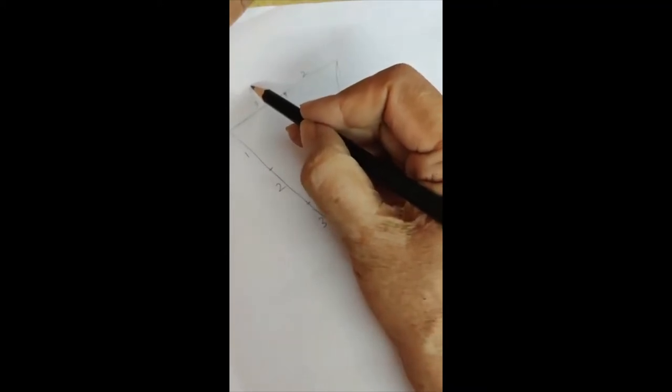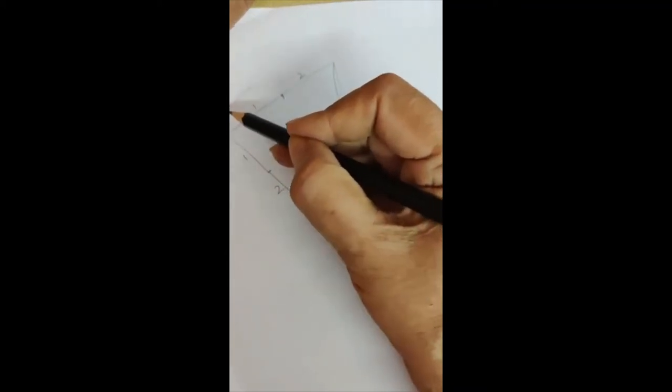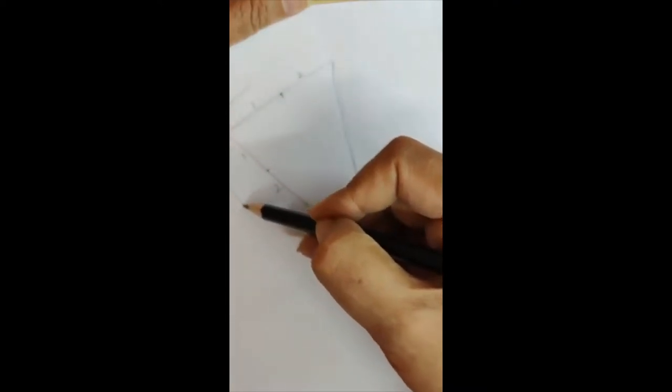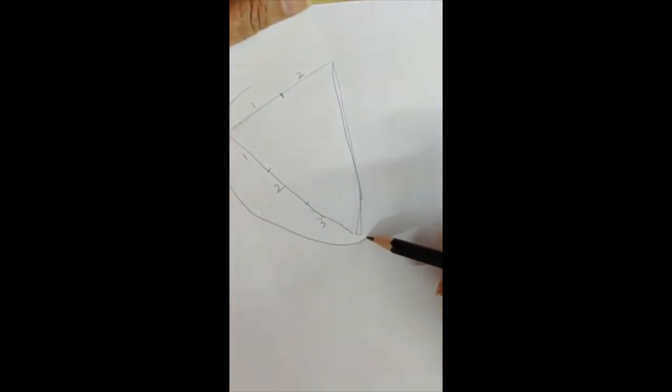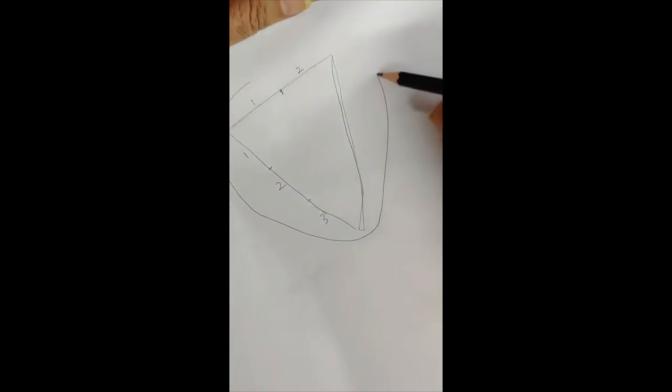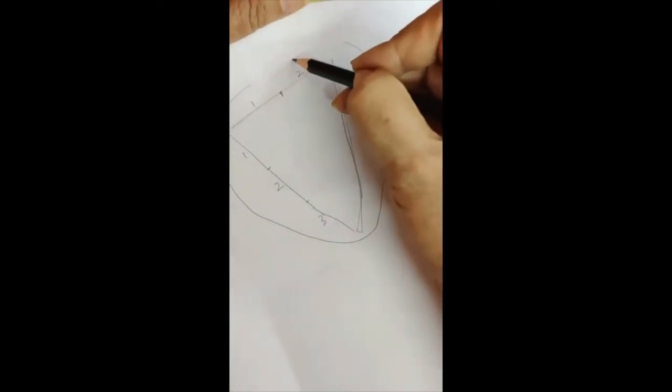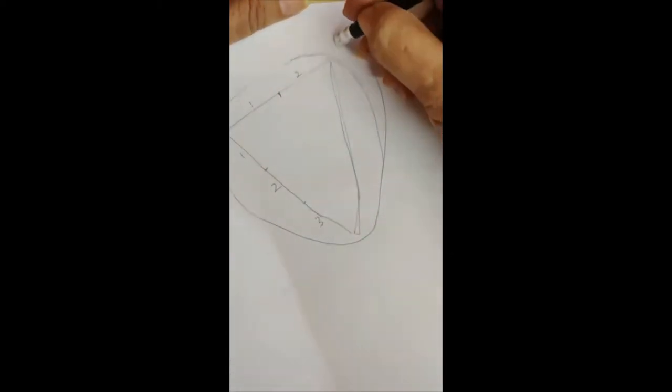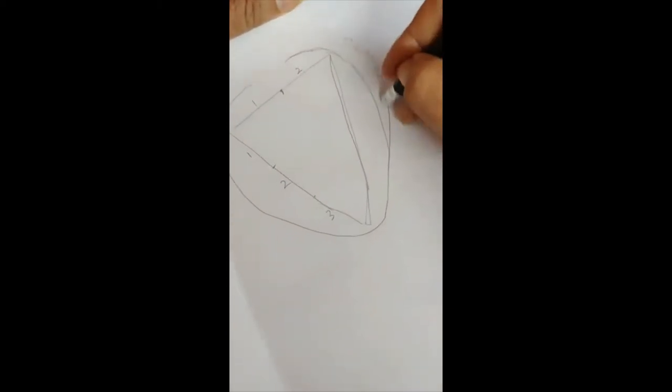Now by using a free hand, you are going to join the three vertices with the free hand. You are going to join the three vertices roughly like this. You can rub off whatever extra you have drawn.